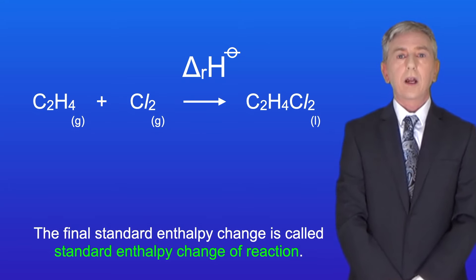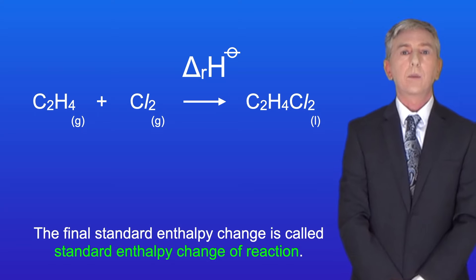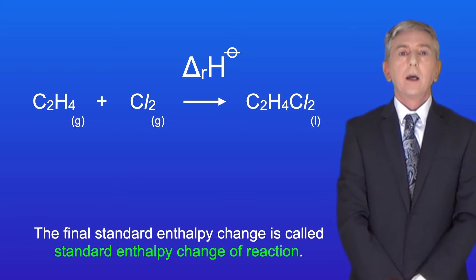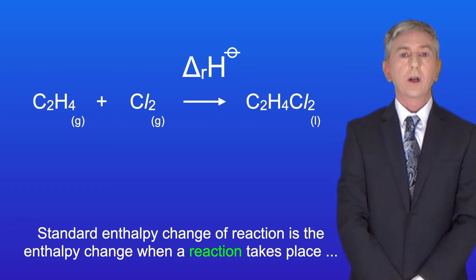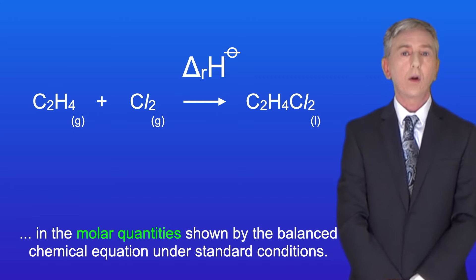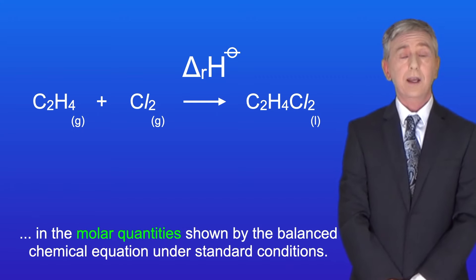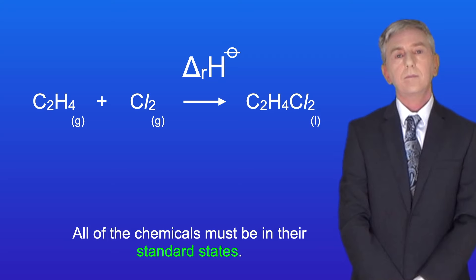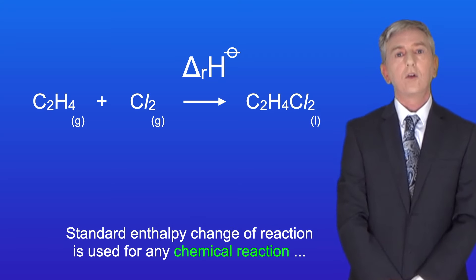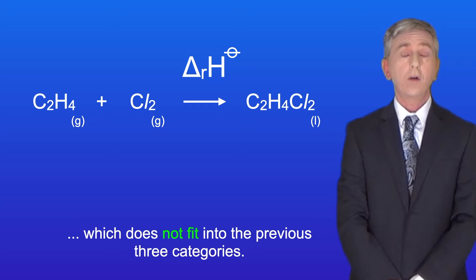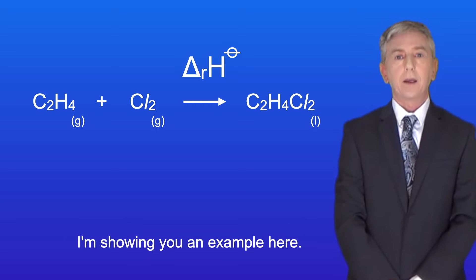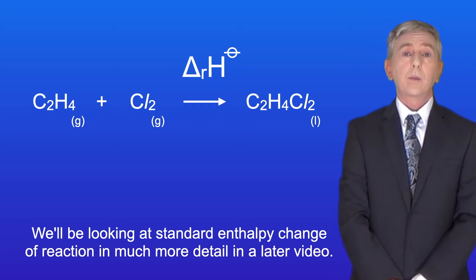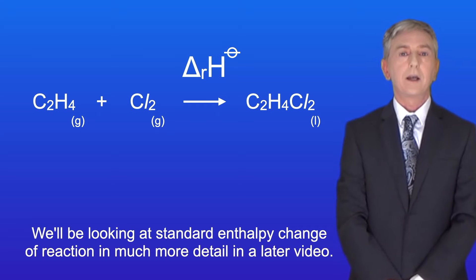The final standard enthalpy change is called standard enthalpy change of reaction. This is the enthalpy change when a reaction takes place in the molar quantities shown by the balanced chemical equation under standard conditions, and all of the chemicals must be in their standard states. Standard enthalpy change of reaction is used for any chemical reaction which does not fit into the previous three categories. I'm showing you an example here, and we'll be looking at standard enthalpy change of reaction in much more detail in a later video.